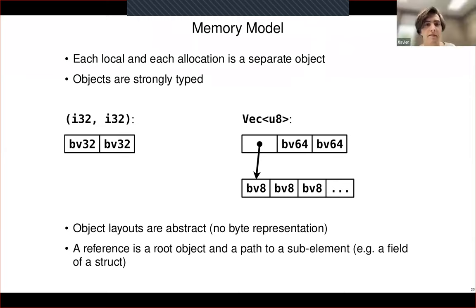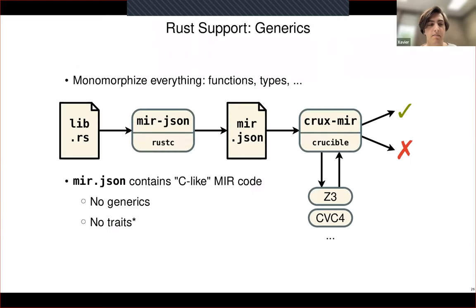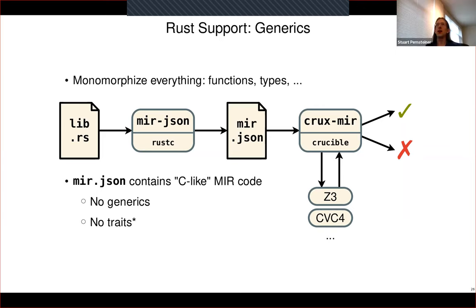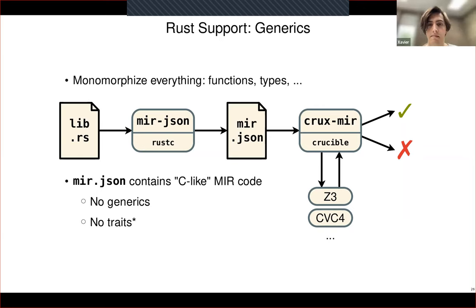Audience question about monomorphization: Does this mean you effectively have to prove the bodies of each monomorphization of each generic function? Answer: Yes — the way this is structured, you have a single non-generic test function at the top level. As we execute through it, any time we encounter an assertion, we check that the assertion holds. It's possible that assertion is in a generic function called multiple times with multiple sets of type parameters, in which case we'll evaluate that assertion multiple times.